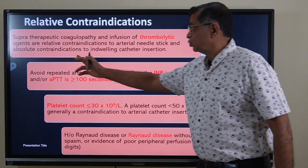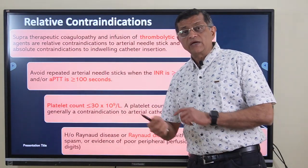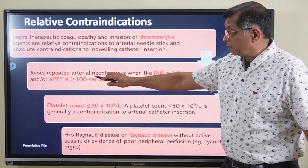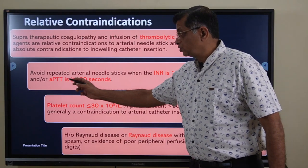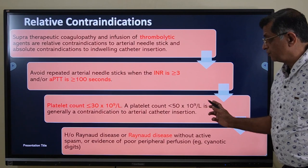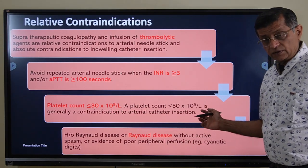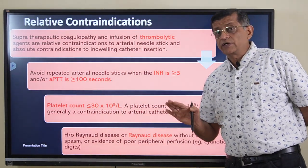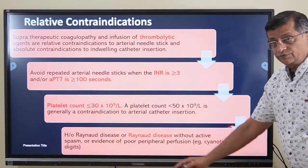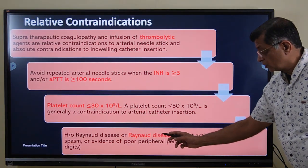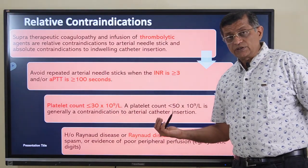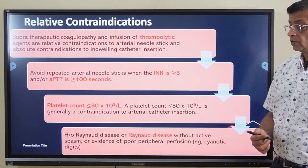Raynaud's disease without active syndrome — meaning no active spasm or evidence of impaired peripheral perfusion, for example no cyanotic digits — is a relative rather than absolute contraindication. Regarding coagulation: avoid repeated arterial needle sticks when INR is more than three or APTT is more than one hundred. A platelet count less than fifty thousand is generally a contraindication for arterial catheter insertion, while less than thirty thousand is a relative contraindication for taking an ABG sample.